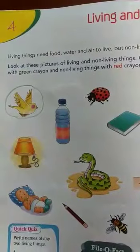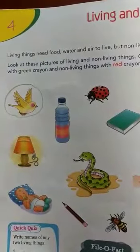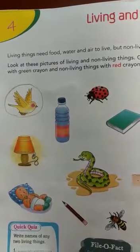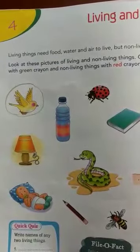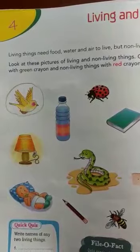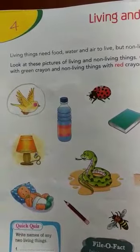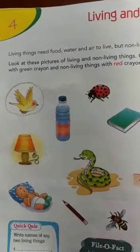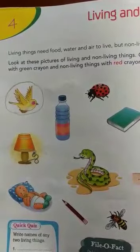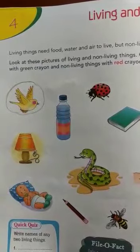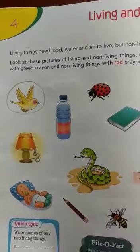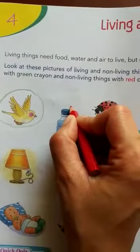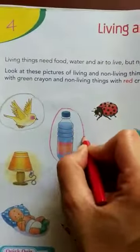The second picture is Bottle. Is Bottle living or non-living? In science you already read about living and non-living things. Living things have life and non-living things do not. Bottle is non-living, so we circle it with red color.